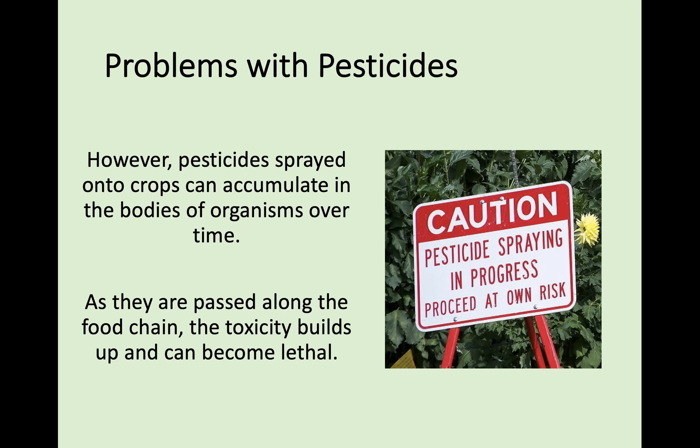Hopefully you remember a food chain with a producer — in this case your crop — then a primary consumer, say a type of beetle eating your plants. You spray pesticides and kill the beetles, but if there is a bird that eats these beetles, that toxic chemical can start to build up in the bird and cause issues there.